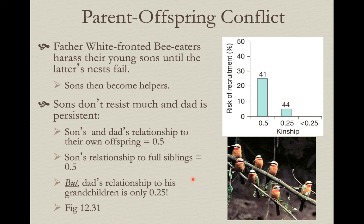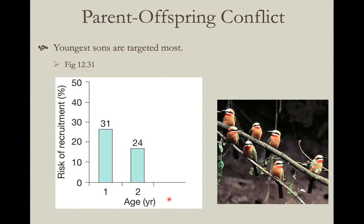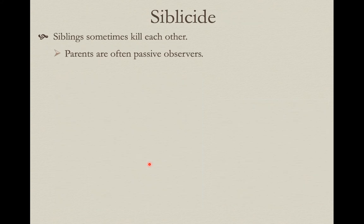From the dad's point of view, if he just let his son reproduce, he's only getting 25% of that because those are his grandchildren. They usually pick on the youngest sons because they're least likely to be successful — they don't have parenting experience, so their reproductive potential is low. That's why they're less resistant to dad's recruitment: at least they'll be raising their siblings and gaining experience, making them more effective when they do eventually reproduce.